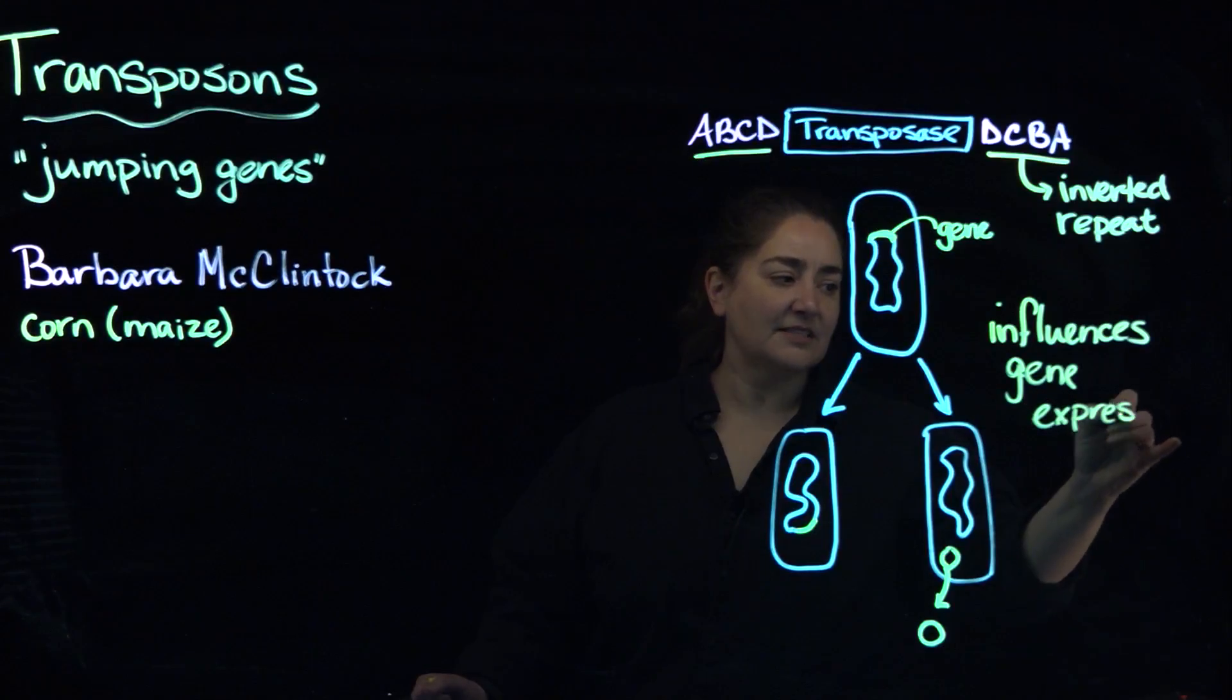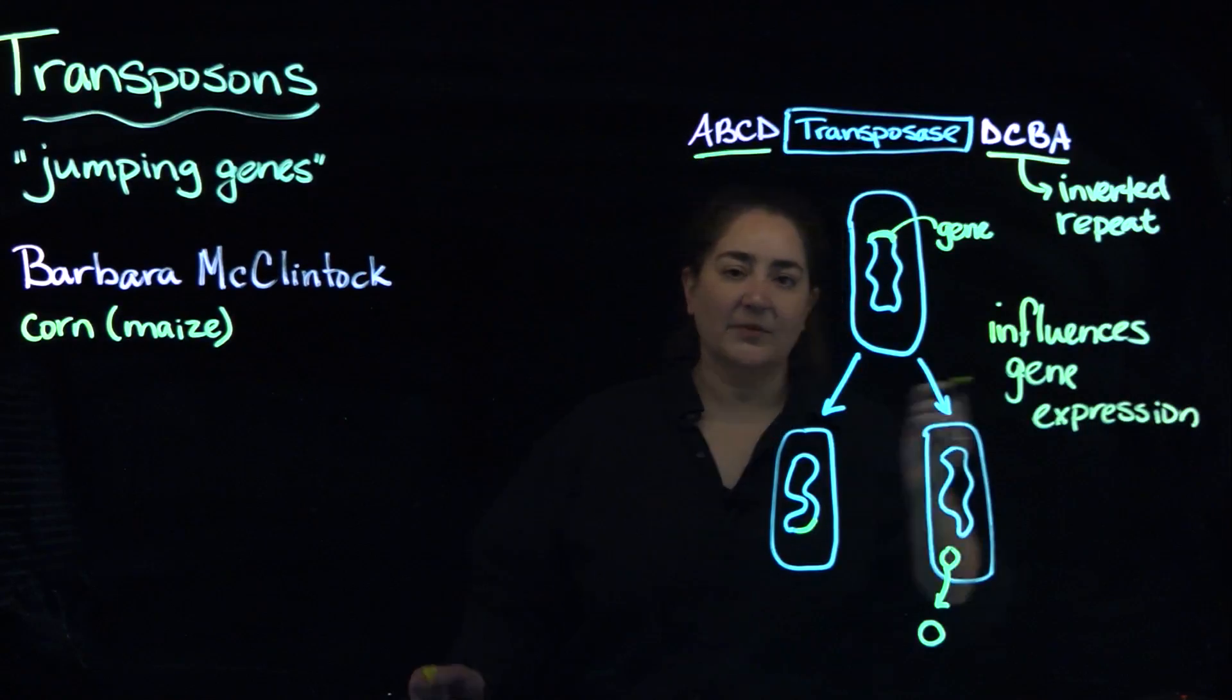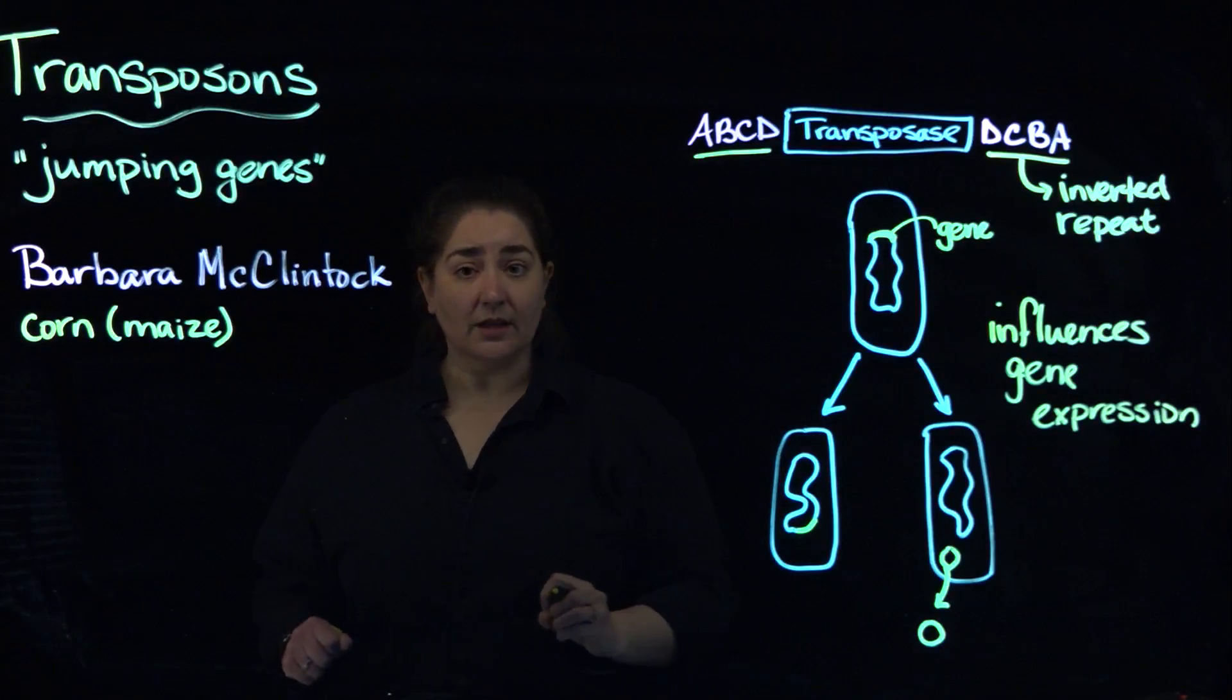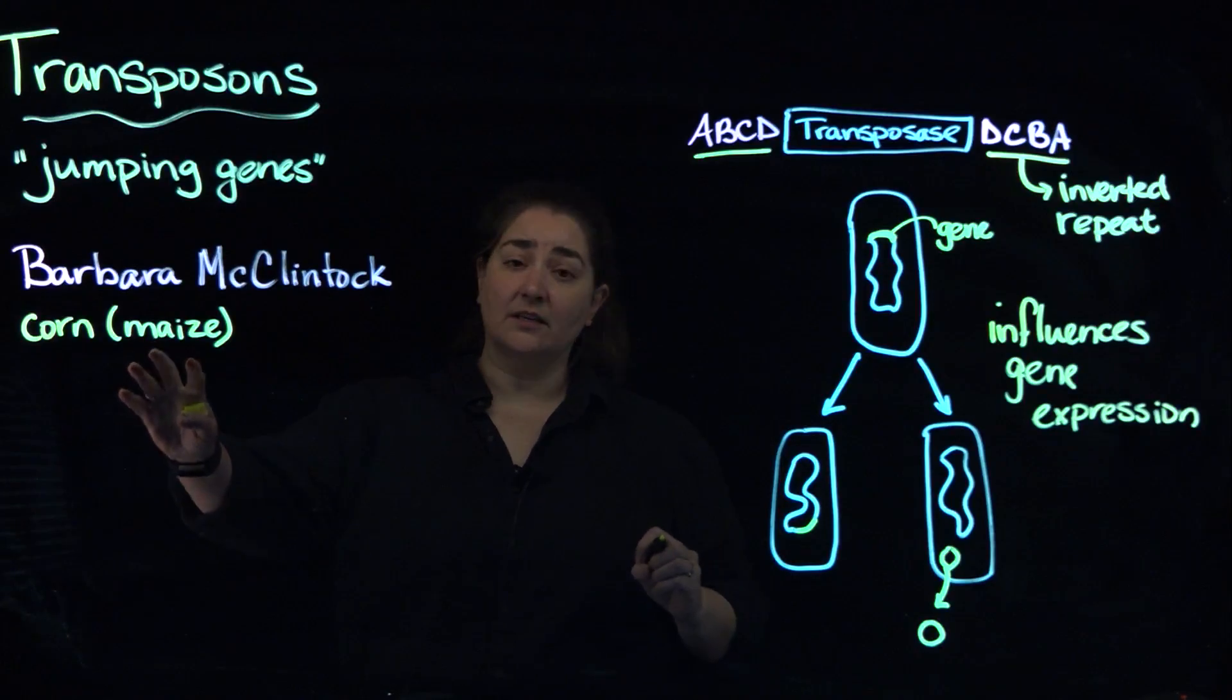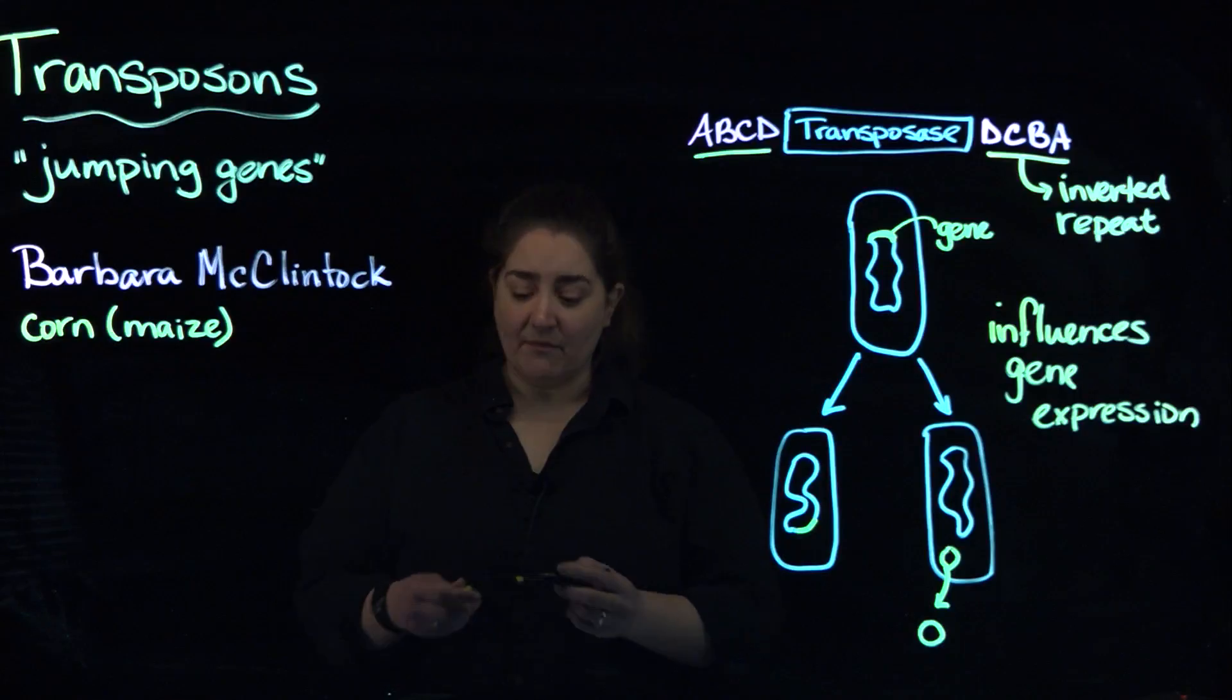So the differences in color depend on where those transposable elements sit down in the maize genome.